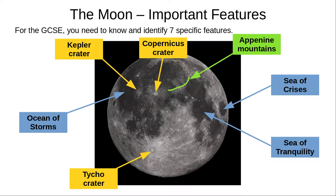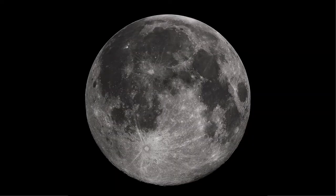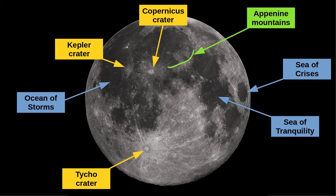You may be asked to label them with their names, or to draw lines from the names to their location on a photo. Take care — the orientation of the picture might be different. Learn these features from these pictures, and in the exam, think about turning the exam paper to match your memory. Here is a picture of the Moon, followed by the same picture with the seven features labelled. Feel free to pause the video and skip between the pictures to try to learn them. If you're on a computer, left and right arrows should do the trick.